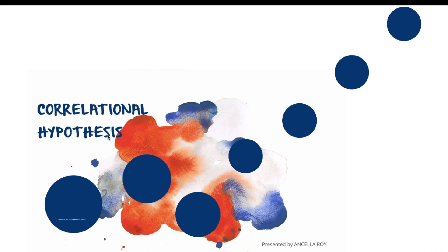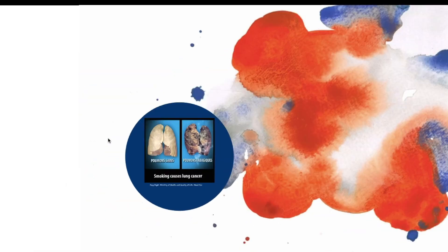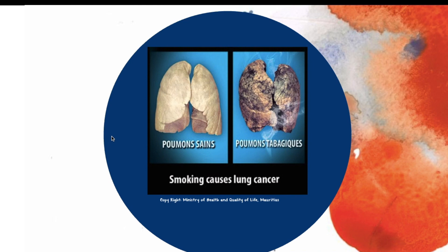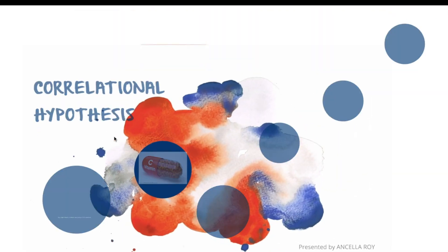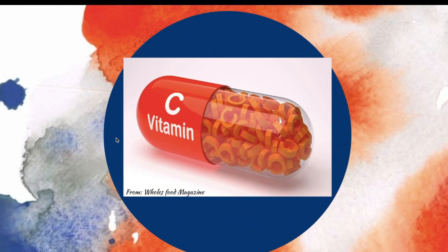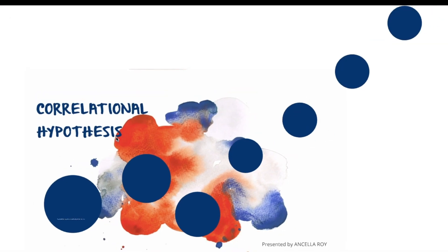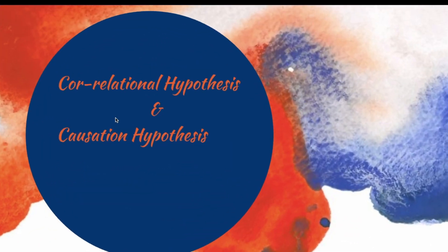Let's imagine a researcher gets a question in his or her mind — they are intrigued and want to know: would smoking cause lung cancer? Or, does vitamin C have anything to do with acne outbreak? The next step for the researcher would be to make a hypothesis. There are two ways: a correlational hypothesis or a causation hypothesis.